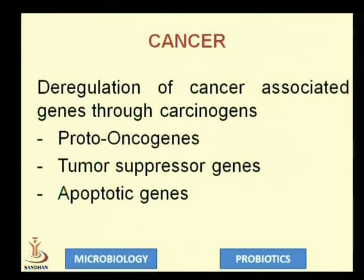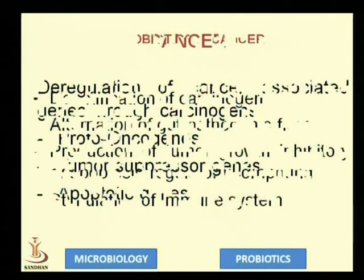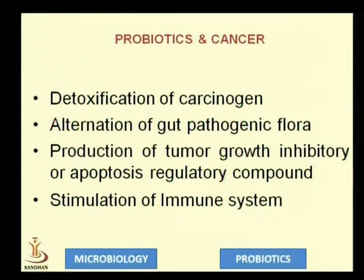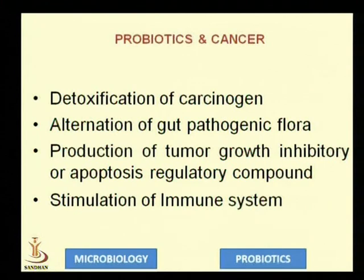Such mutations are caused by certain chemicals called mutagens, or more specifically carcinogens, which are either ingested or produced by the metabolic actions of pathogenic microorganisms in the gut. Probiotic microorganisms produce metabolites that detoxify these carcinogens, alter the gut flora to inhibit pathogenic metabolic processes, produce metabolites that activate tumor suppressor genes and programmed cell death genes, and activate the host immune system.